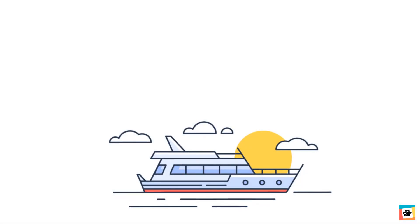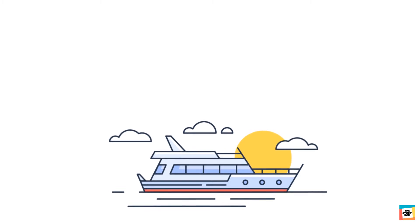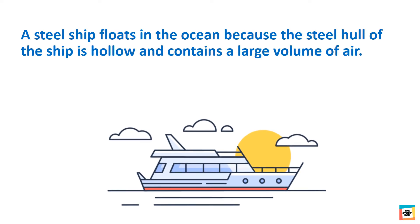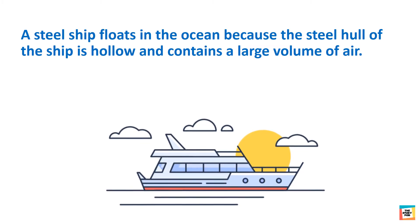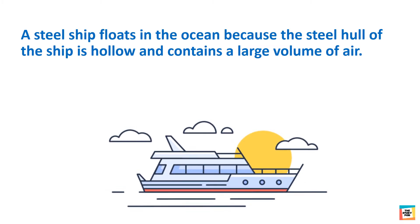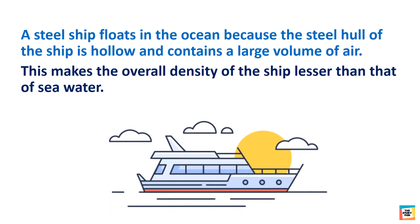Have you ever wondered how such a huge and heavy ship floats on water? A steel ship floats in the ocean because the steel hull of the ship is hollow and contains a large volume of air. This makes the overall density of the ship less than that of sea water.